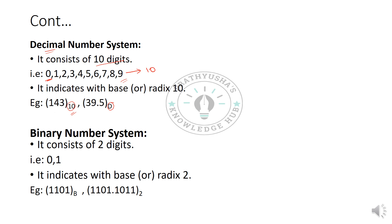Coming to the next one — binary. Binary is related to two digits: 0 and 1. The base or radix of binary is 2. Numbers are represented with 1s and 0s. The binary notation can be indicated either with the letter B or with the base 2.